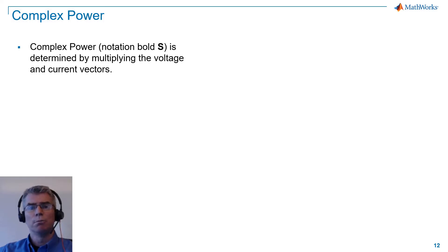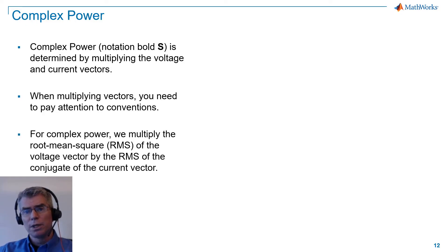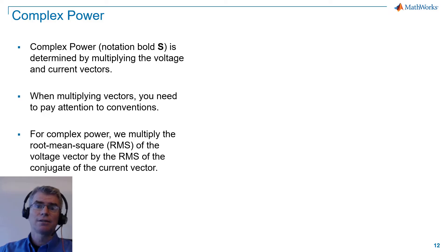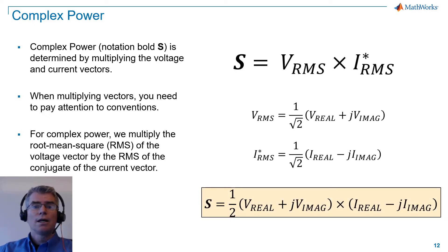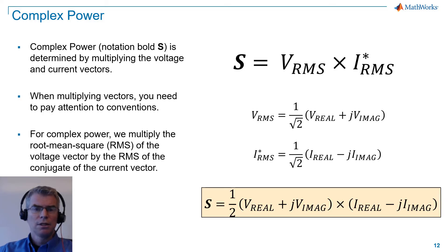Complex power, which has the notation bold S, is determined by multiplying the voltage and current vectors. When multiplying vectors, you need to pay attention to conventions. For complex power, we multiply the root mean square (RMS) of the voltage vector by the RMS of the conjugate of the current vector. The RMS value is 1 over square root 2 of the peak value. We show voltage and current in complex form, where V RMS is 1 over root 2 times (V real plus J times V imaginary).